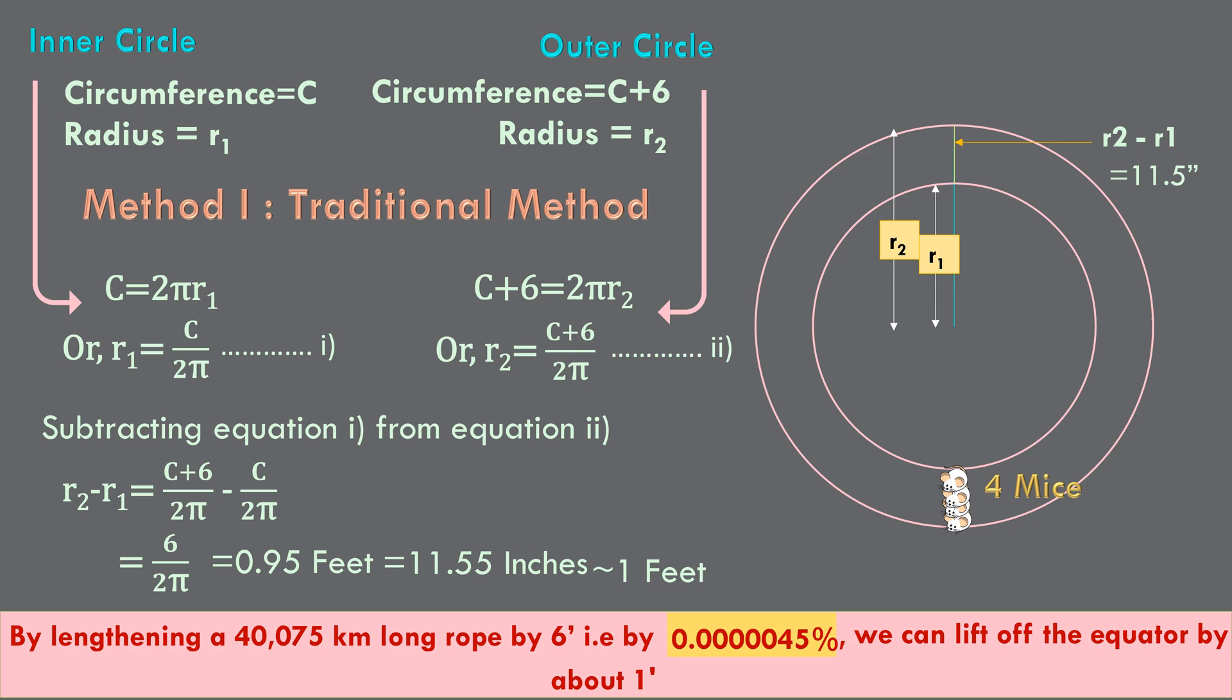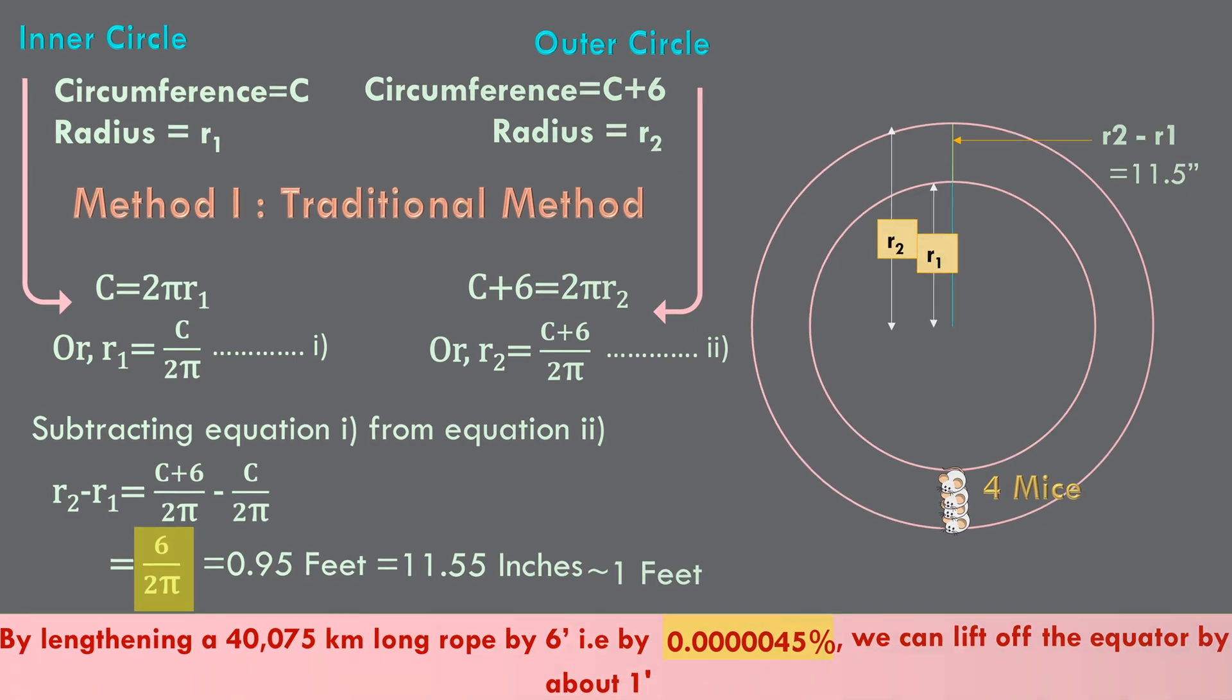Did you notice that the end result did not include the circumference of the earth? It only required the length of added rope and pi. Since it didn't include circumference, we can say that the solution is not dependent on the circumference of the earth. Once we know this, we can hire a method more elegant, easy and quick to solve it. This elegant method of solving is a very powerful problem solving strategy and it's called considering extreme cases. Wanna know how? Okay.